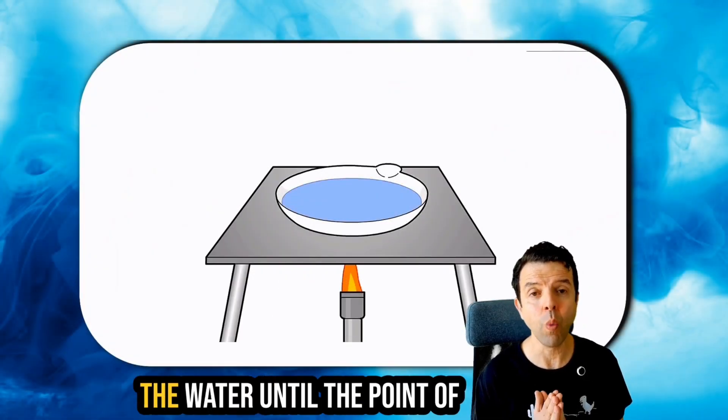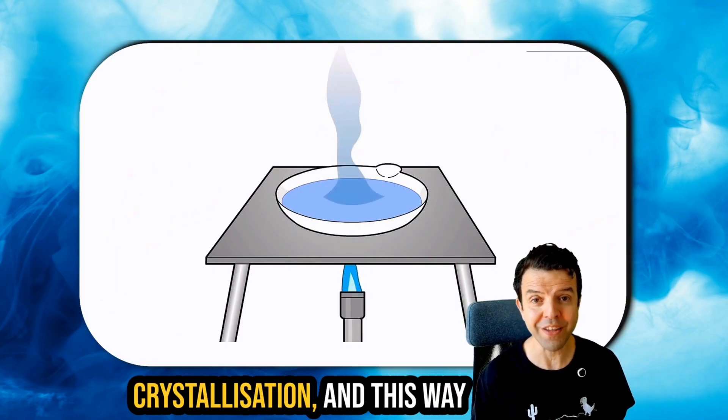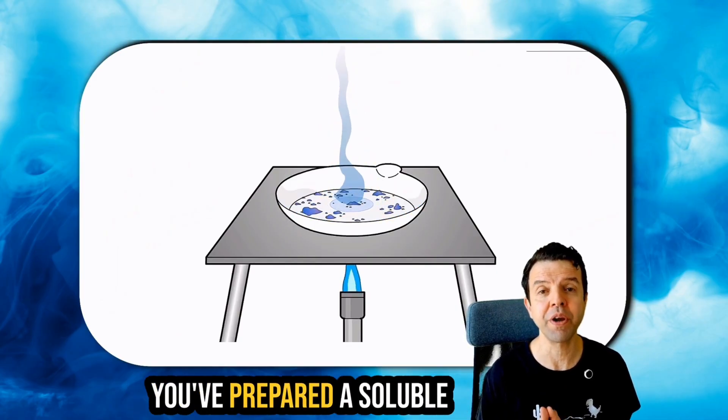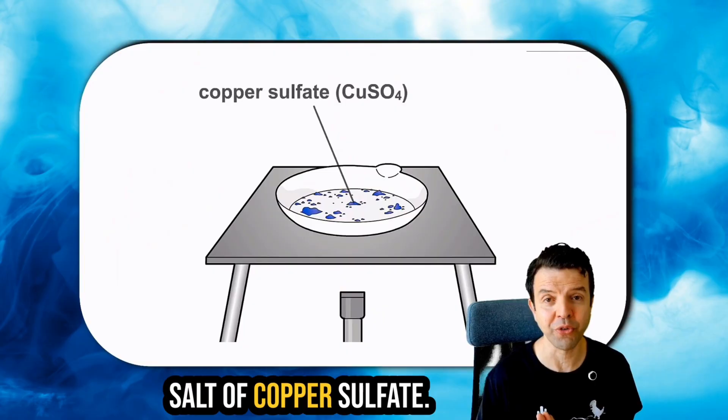Next, we will evaporate the water until the point of crystallization, and this way you've prepared a soluble salt of copper sulfate.